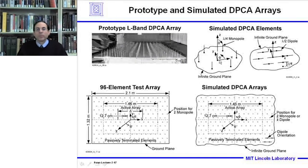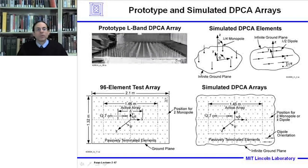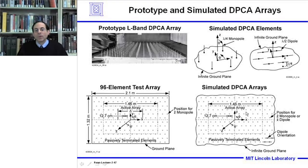We're going to simulate DPCA arrays with monopoles and dipoles, and we also have measured data at Lincoln Laboratory for a prototype L-band DPCA array for comparison. The actual DPCA test array that was built was an array of 96 monopole elements, roughly 1.5 meters across in a hexagonal lattice on a 2.1 meter ground plane. In the simulated arrays, we use the same lattice but can do both monopoles and dipoles, simulating as close as possible the array that was built and tested.